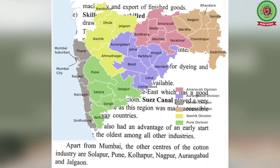Apart from Mumbai, the other centers of the cotton industry in Maharashtra are Solapur, Pune, Kolhapur, Nagpur, Aurangabad, and Chalgaon.